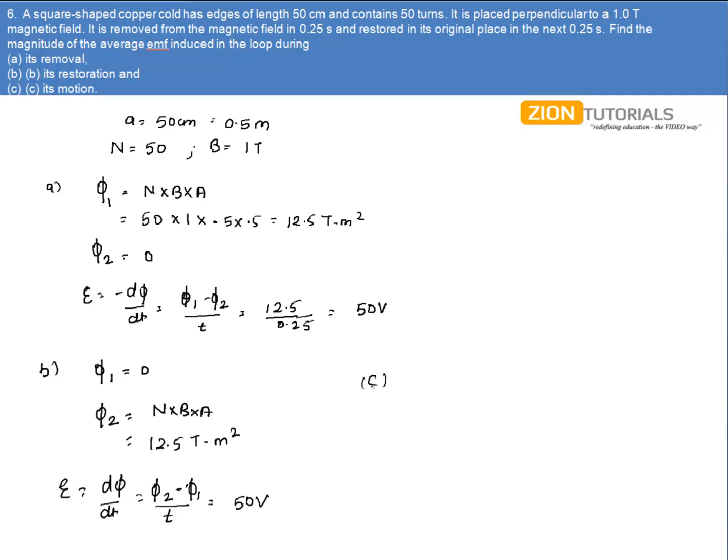Now, in case C, during complete motion, initially when there was no motion, φ₁ that is initial flux will be 0. Also, when it is completely restored, the final flux will be 0 again. So the net EMF that is induced will be dφ by dt is 0, and that is the answer.